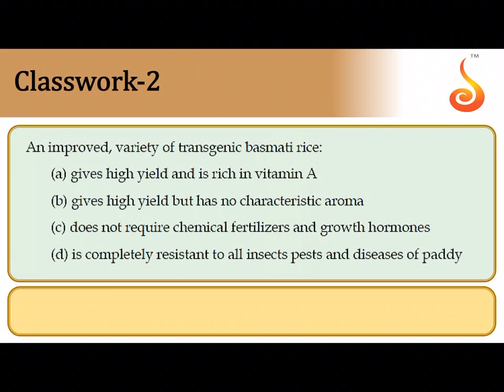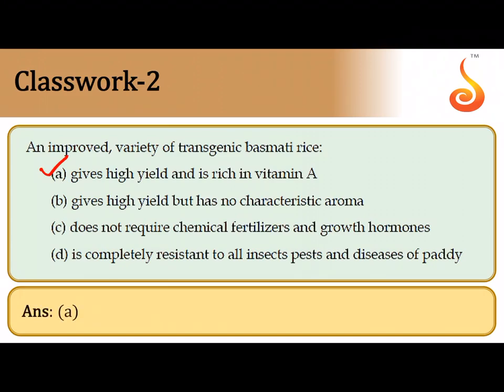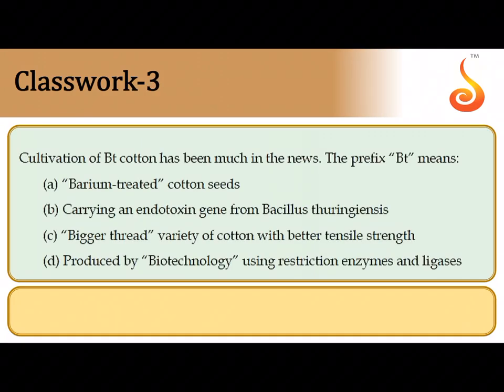The second question says: an improved variety of transgenic basmati rice, similar to golden rice, gives a high yield and is also rich in vitamin A. It is fortified with vitamin A through genetic engineering. So the correct answer is option A.